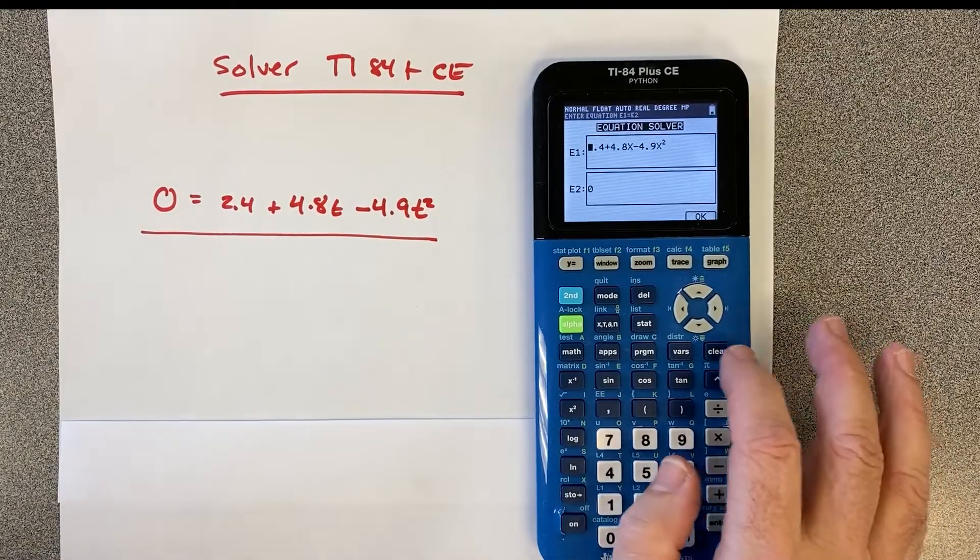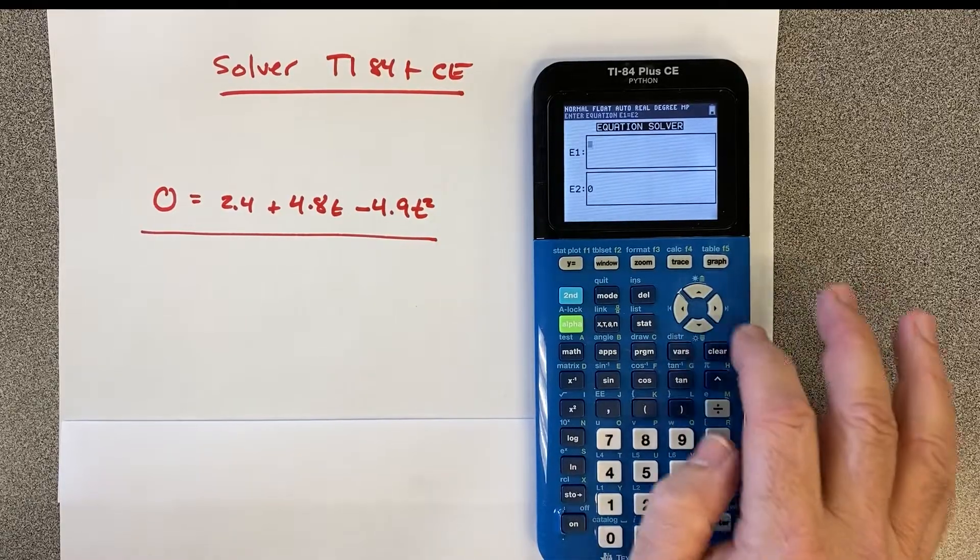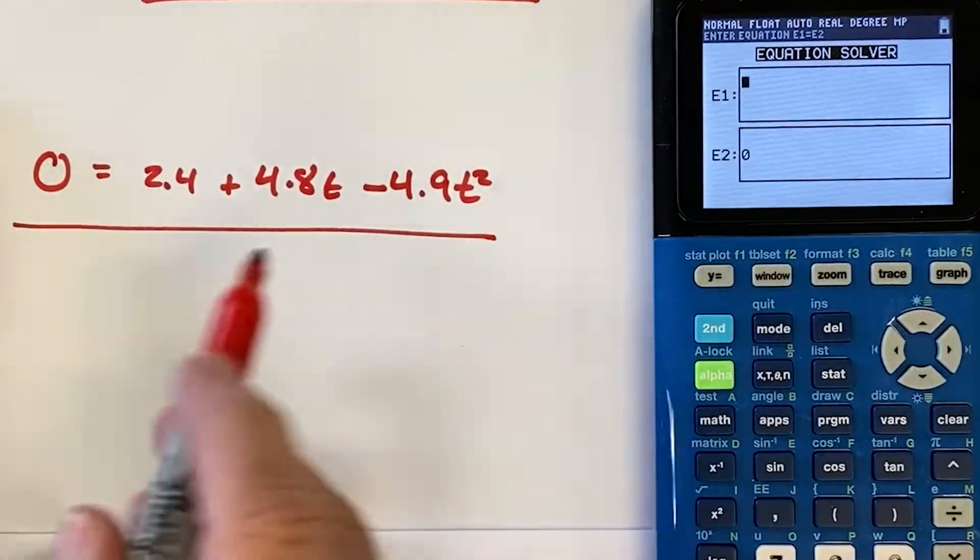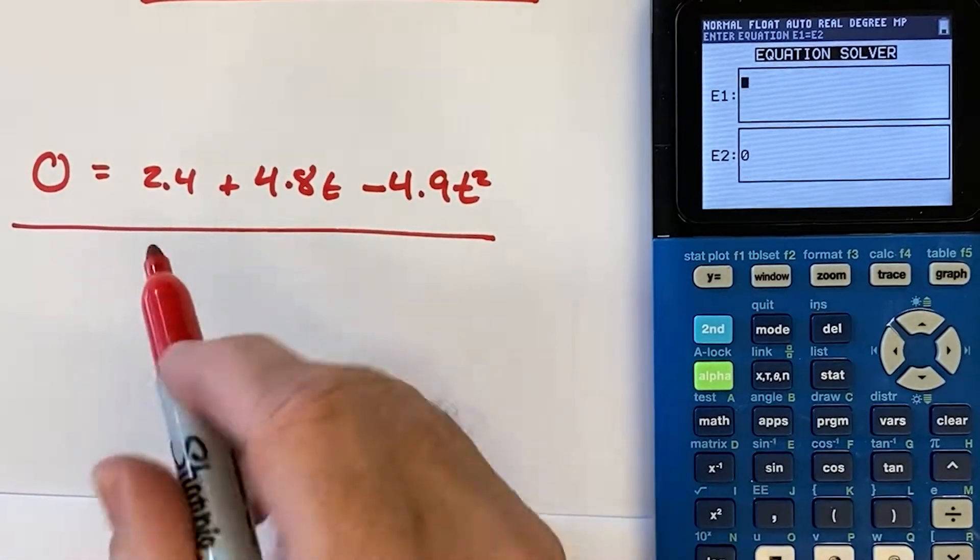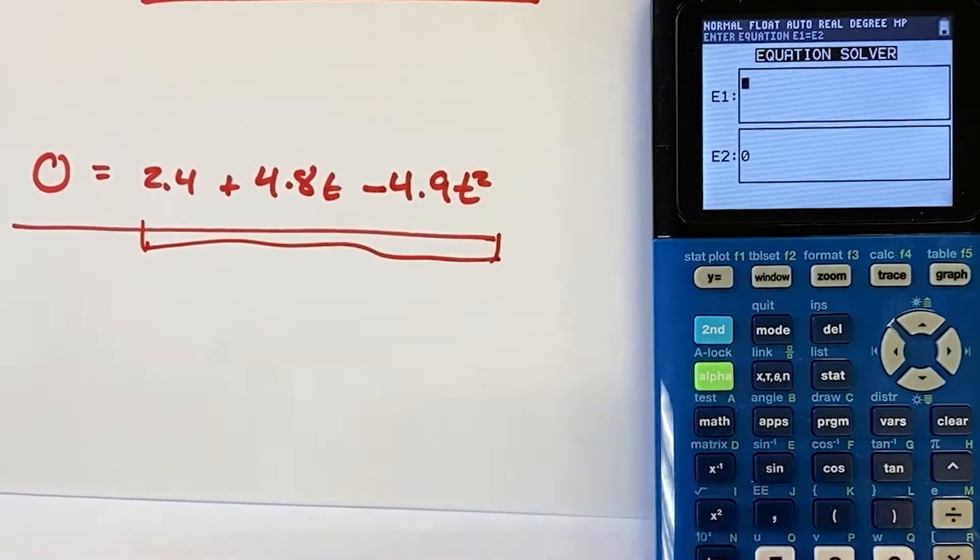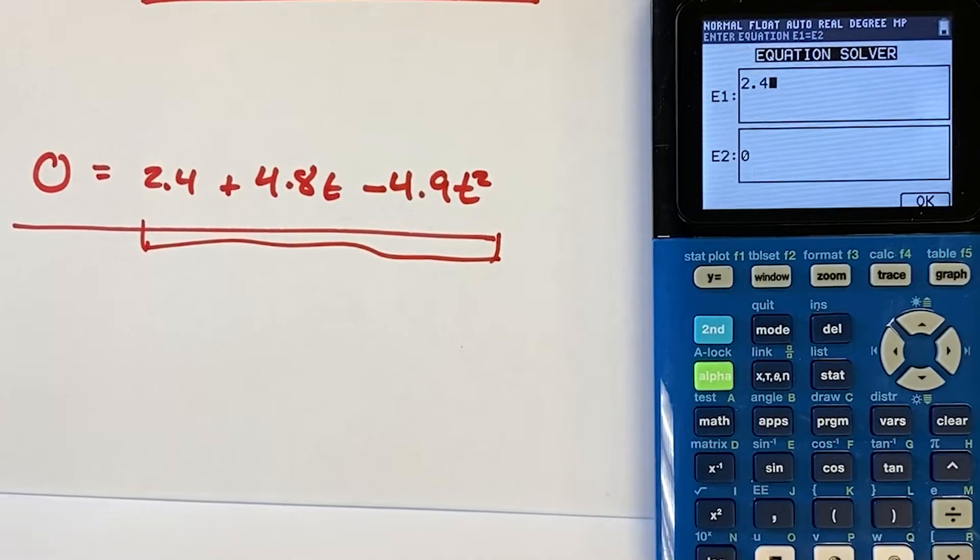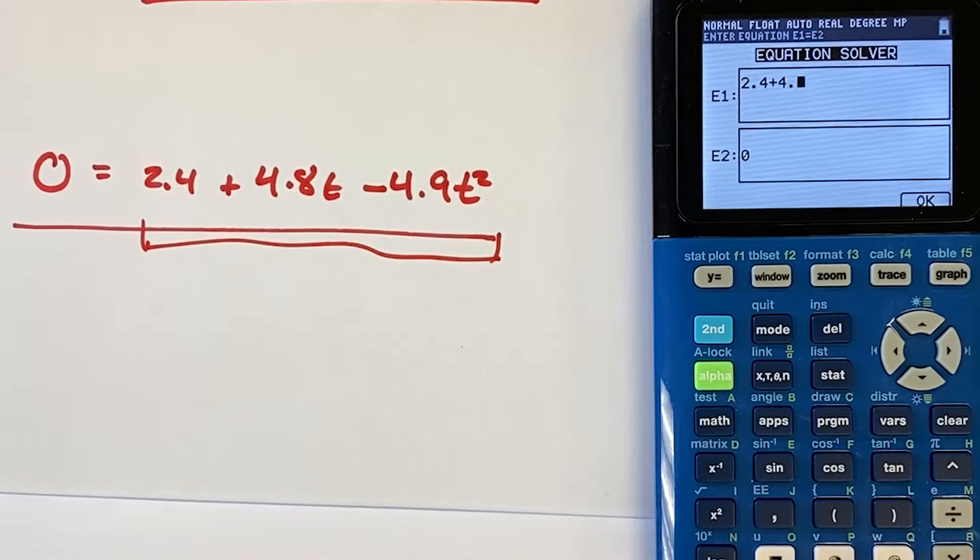I click on numeric solver, and I have these two boxes. I've got this E1 and E2. And what I'm going to do in E1 is I'm going to just write the left side of this equation. So I'm going to say 2.4 plus 4.8.